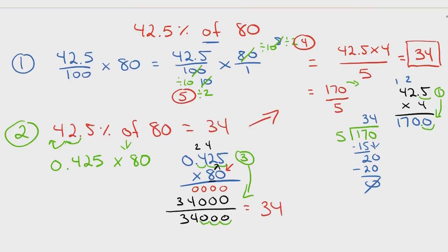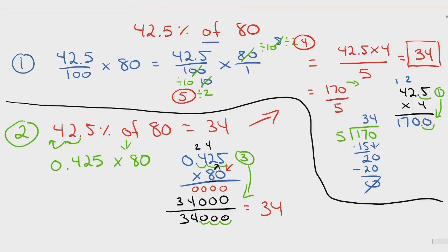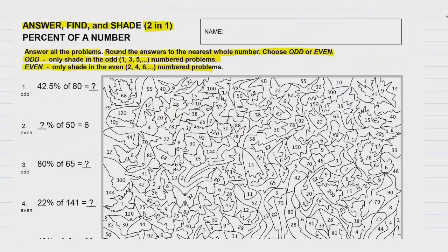So there are two ways of solving these problems and they always work. Now there are some shortcuts we'll do that will save us a lot of time. But if you don't get the shortcuts, you can always use one of these ways. I prefer doing the decimal way, and that's how I'm going to solve these problems on this worksheet. So there is problem number one — the answer is 34. If you were doing odds, you'd be looking for all the 34s in this picture. If you're doing even, you would not shade this one in.